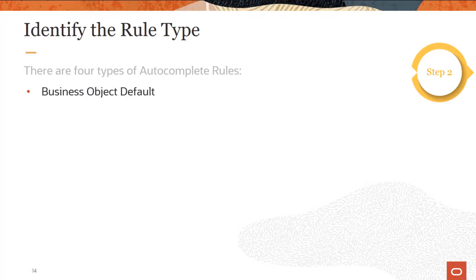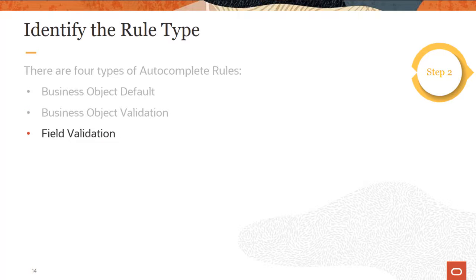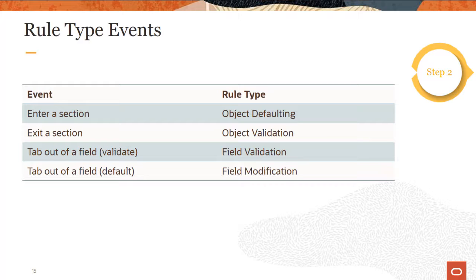There are four types of autocomplete rules. A business object default rule triggers when the selected business object is created by the application, which is when the user enters the section or clicks the Add button. A business object validation rule triggers when the selected business object is saved by the application, which is when the user clicks the Continue, Submit, or Save and Close buttons. A field validation rule triggers when a field of a given business object enters the ADF validation cycle, which is when the user tabs out of a field. A field modification rule also triggers after the user tabs out of a field, but it occurs after the completion of the field ADF validation. This table characterizes these rule types and how they function, helping you understand the events and timing which trigger the different rules.